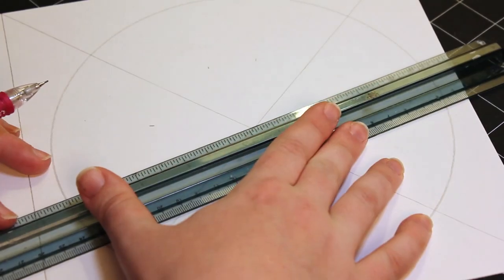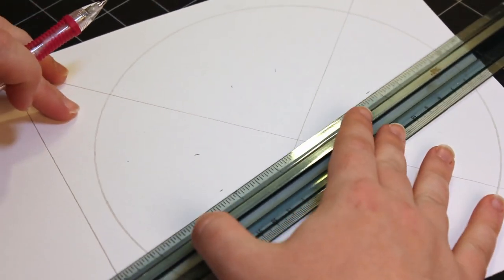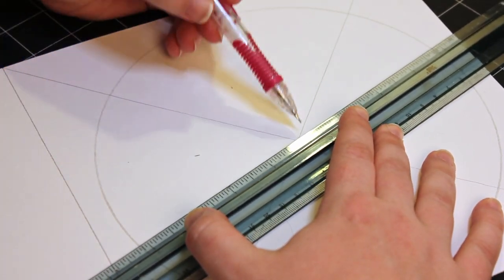Finally, use your ruler to connect the marks from one side to the other, ending your line at the circle's outline.